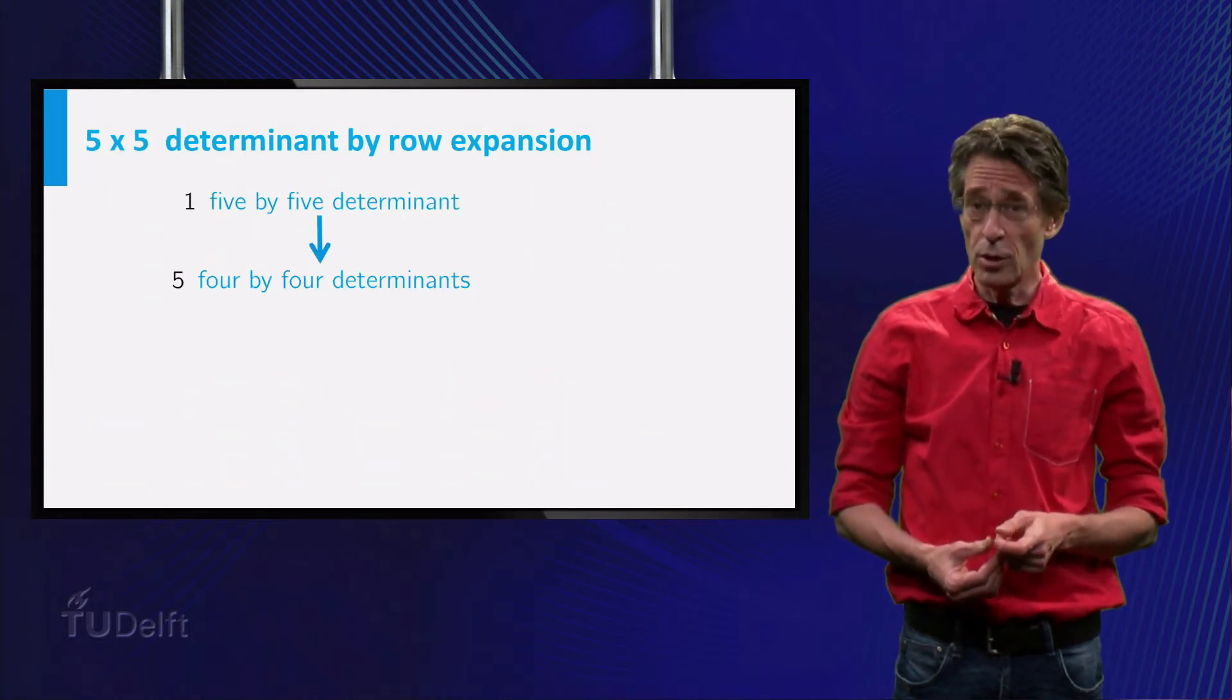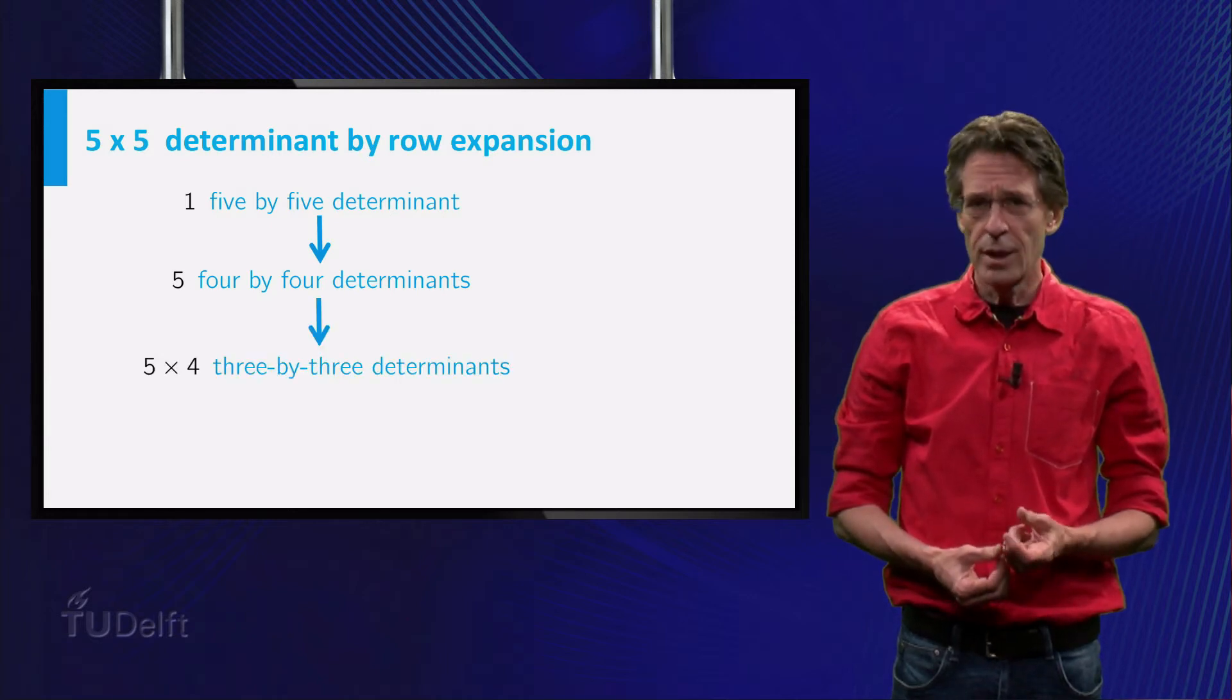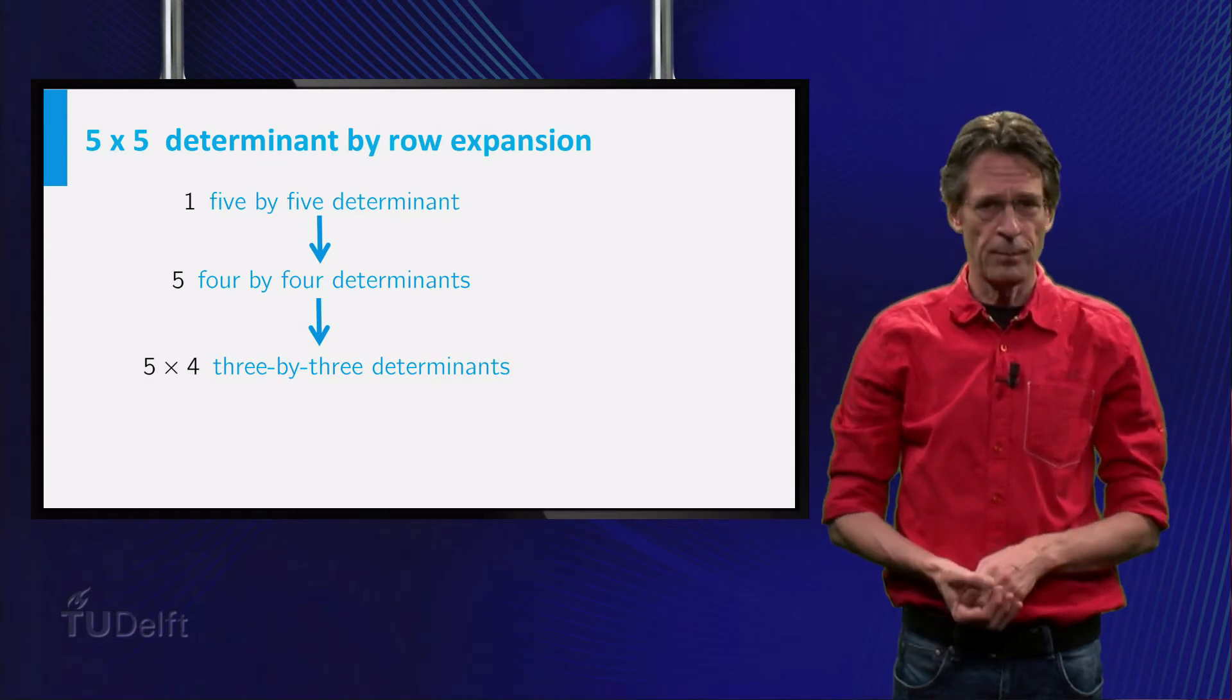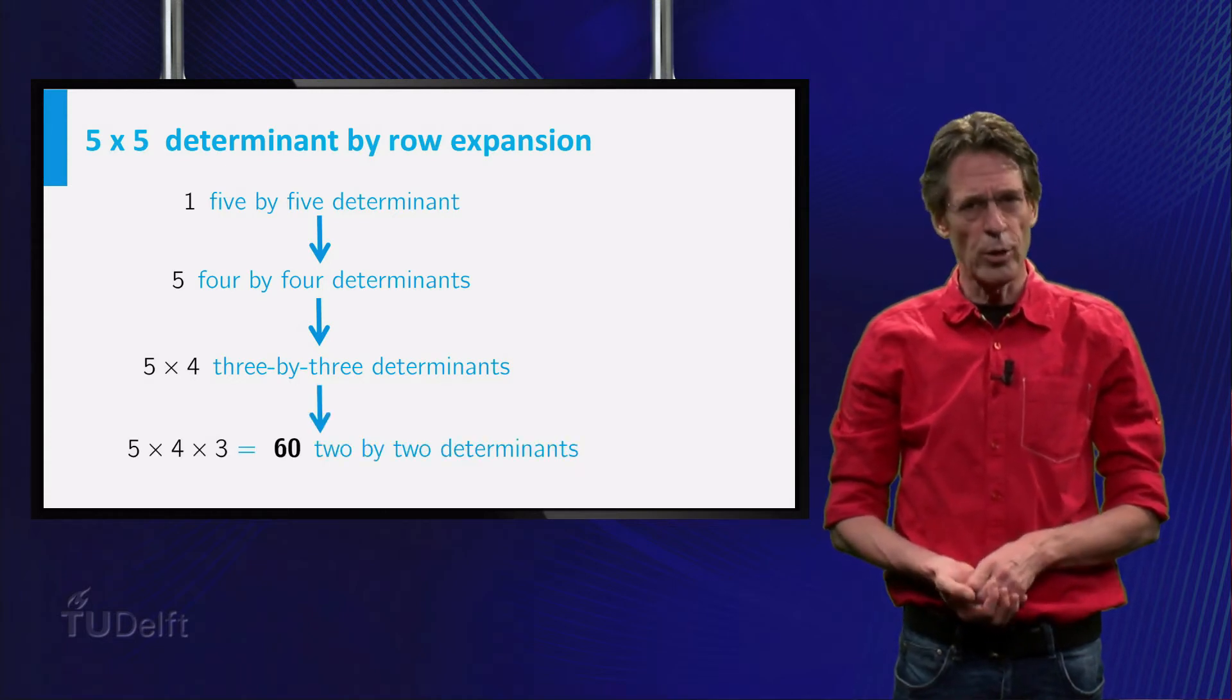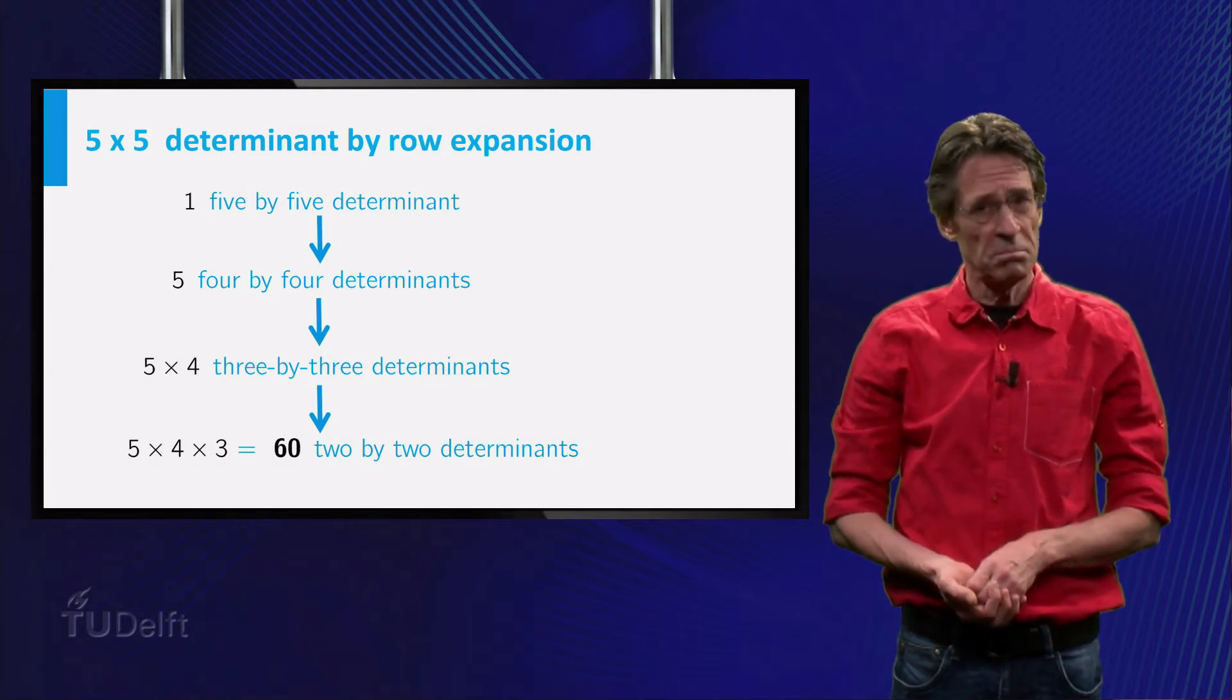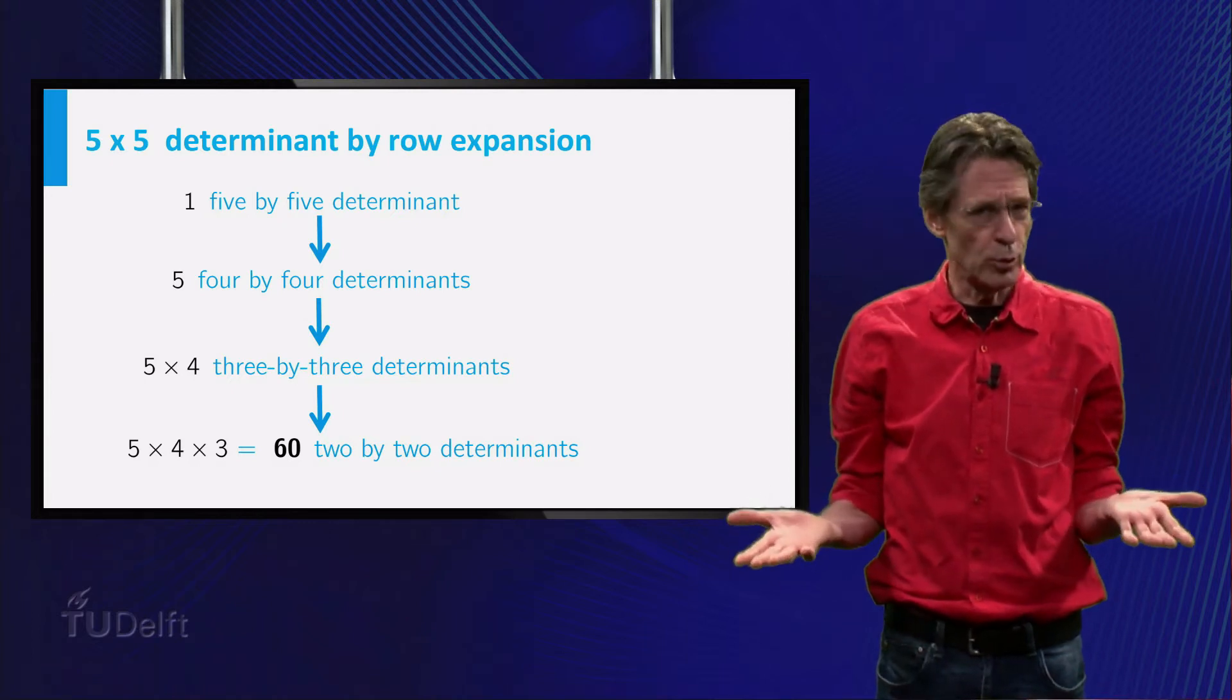Applying the same procedure to these 4x4 determinants, we would get 5 times 4 equals 20 3x3 determinants, etc. This is quite a lot of work. And if the size of the matrix gets larger, say 10 by 10, the total number of products will grow completely out of control.